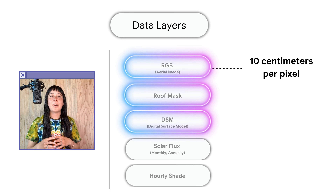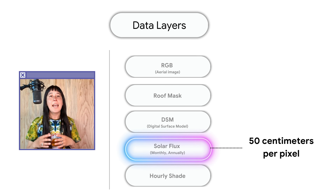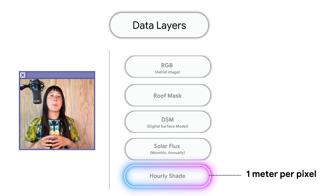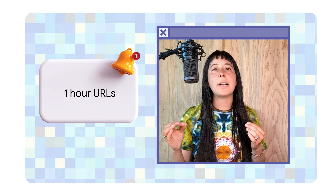Most of the GeoTIFF files are at a resolution of 10 centimeters per pixel, but the monthly sunshine file is at 50 centimeters per pixel, and hourly shade files are at 1 meter per pixel. If a pixel size is specified, that becomes the minimum resolution for the GeoTIFF files. Note that these GeoTIFF URLs are valid for an hour, and prior searches can be cached or saved for 30 days to give enough time to help with a particular solar deal.